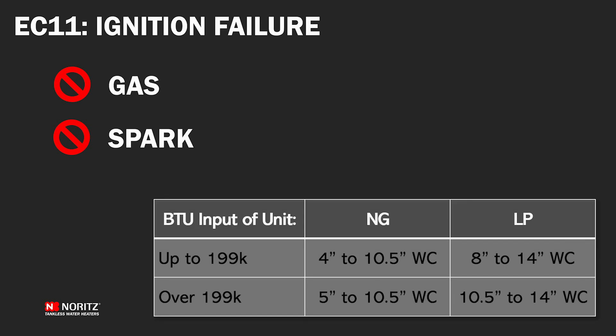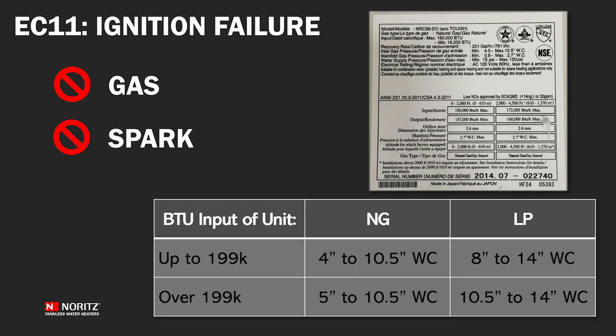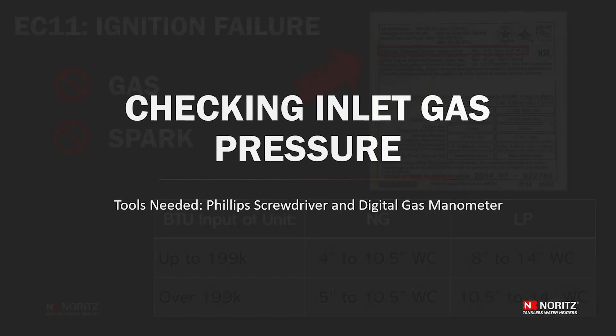Here are the minimum and maximum inlet gas pressures required based on the max BTU input and gas type of the unit. You don't need to memorize this chart as the required minimum and maximum gas pressures are listed right on the rating plate of the unit. I will show you two troubleshooting steps that account for the majority of error code 11 causes: checking the inlet gas pressure and cleaning the ignition rod assembly.